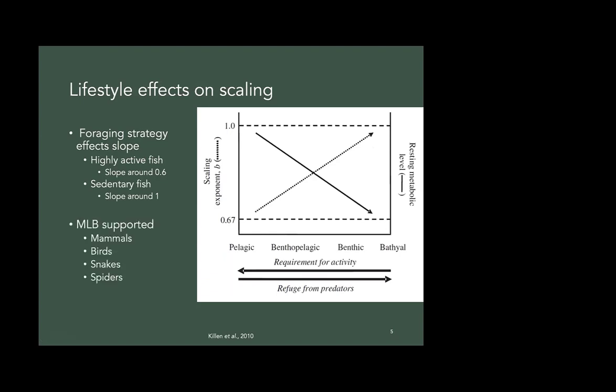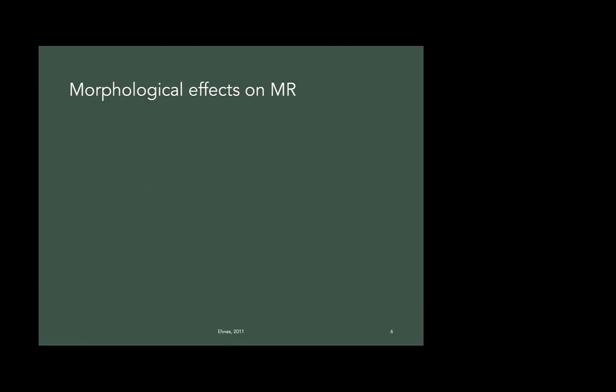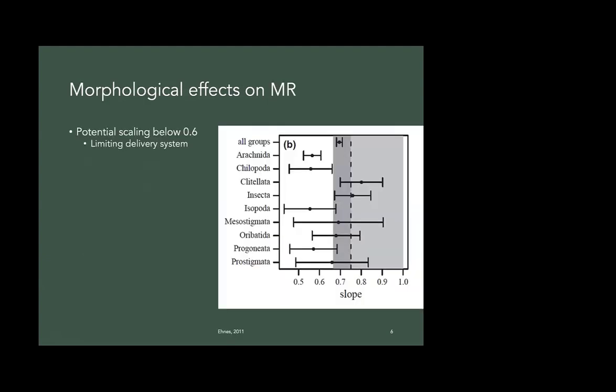So this MLB hypothesis, the metabolic levels boundary hypothesis, has been supported in many different organisms including spiders. So Ennis et al. looked at this in a bunch of invertebrate taxa and found that there's a potential for scaling actually below that 0.66. And this is probably due to their oxygen delivery system and nutrient system.